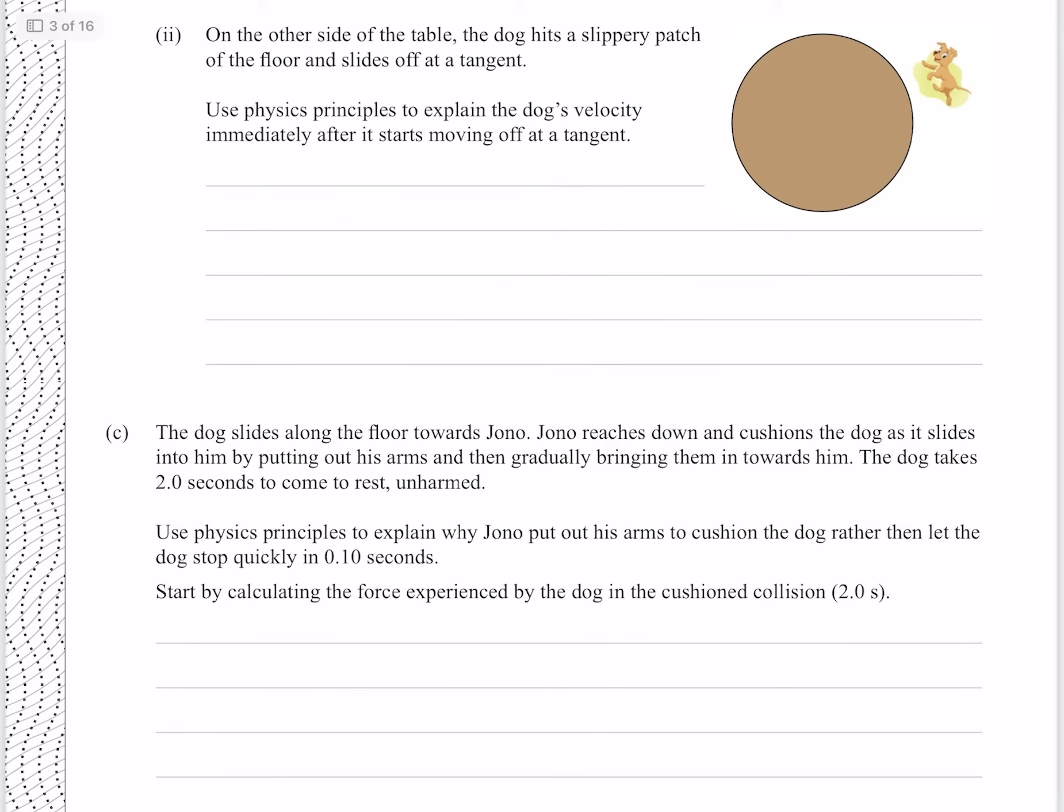On the other side of the table, the dog hits a slippery patch of the floor and slides off at a tangent. Use physics principles to explain the dog's velocity immediately after it starts moving off at a tangent. Prior to slipping, the dog was experiencing a centripetal force that was constantly changing its velocity. When the dog slips, it loses friction and therefore it loses its centripetal force and the dog will continue in the direction of its existing velocity which is at a tangent to the circle. As Fc is no longer acting, the dog moves at a constant velocity tangent to the circle.